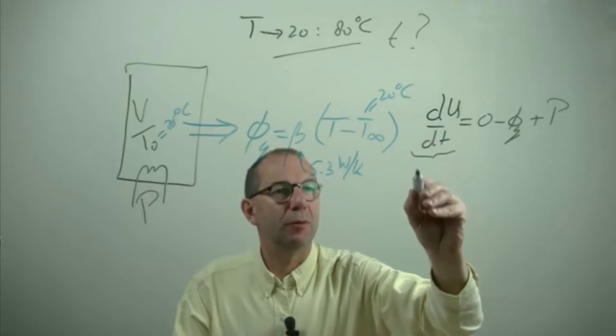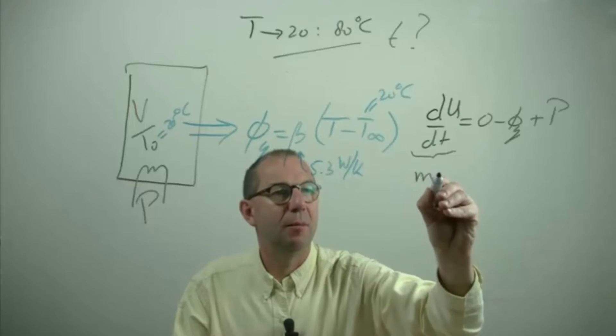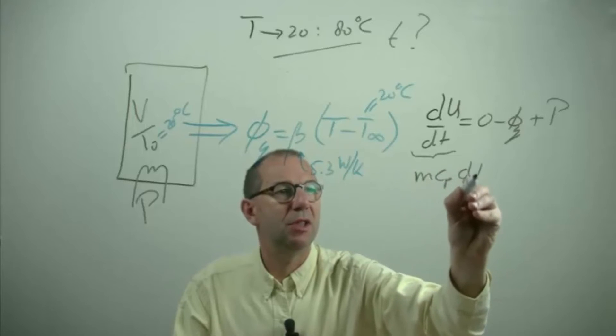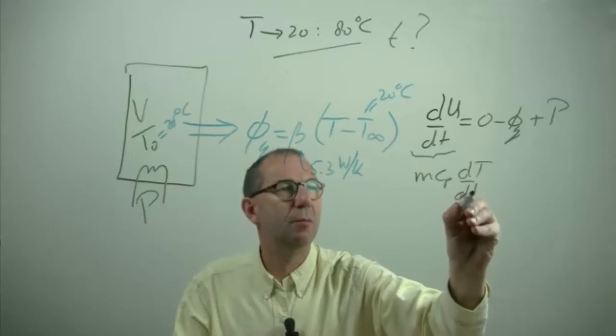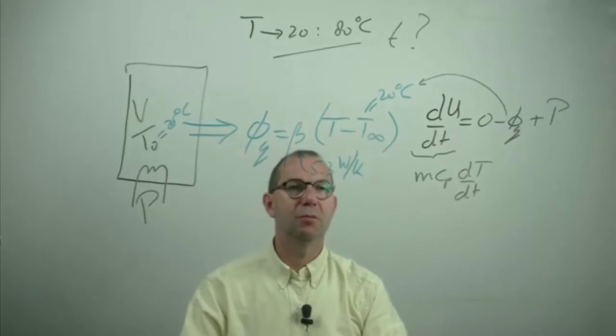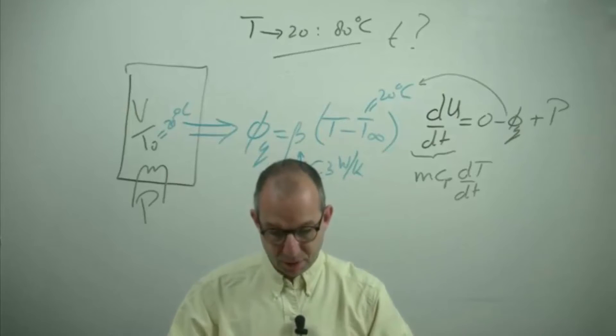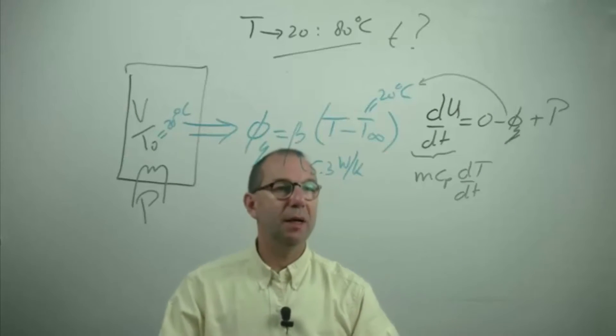We know that we can write this from a previous example as m cp dT/dt and we have this one coupled to the temperature difference. Okay so we have set up our balance.